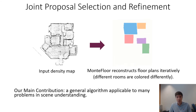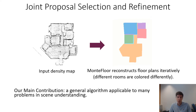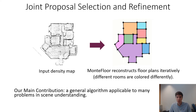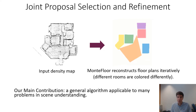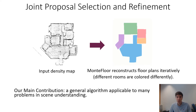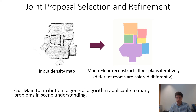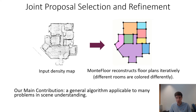Our general algorithm jointly performs proposal selection and refinement. In this work, we apply it to the floor plan reconstruction task, and we call the resulting method Montefloor. We demonstrate that Montefloor iteratively reconstructs complex floor plans without heuristics. We show this in our animation and observe how quality of reconstruction consistently improves through iterations, taking into account not only individual quality but also fitness between selected rooms and the global reconstruction quality.